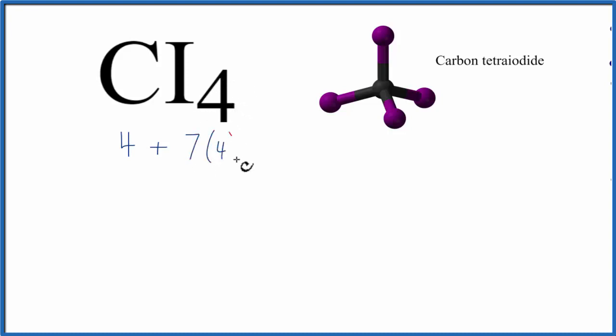We have 4 of them, though. So 4 plus 28, that gives us 32 total valence electrons for CI4.